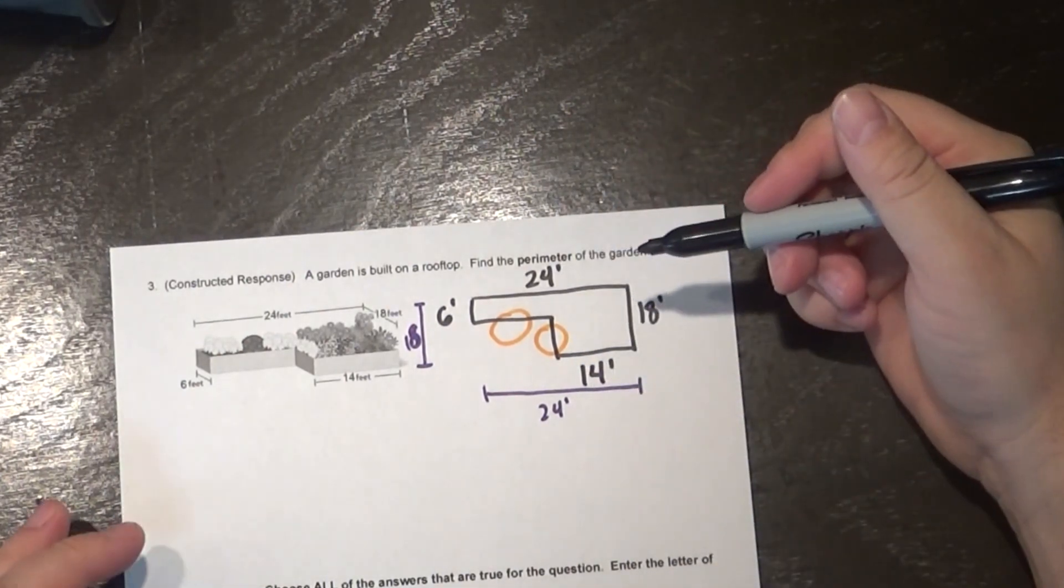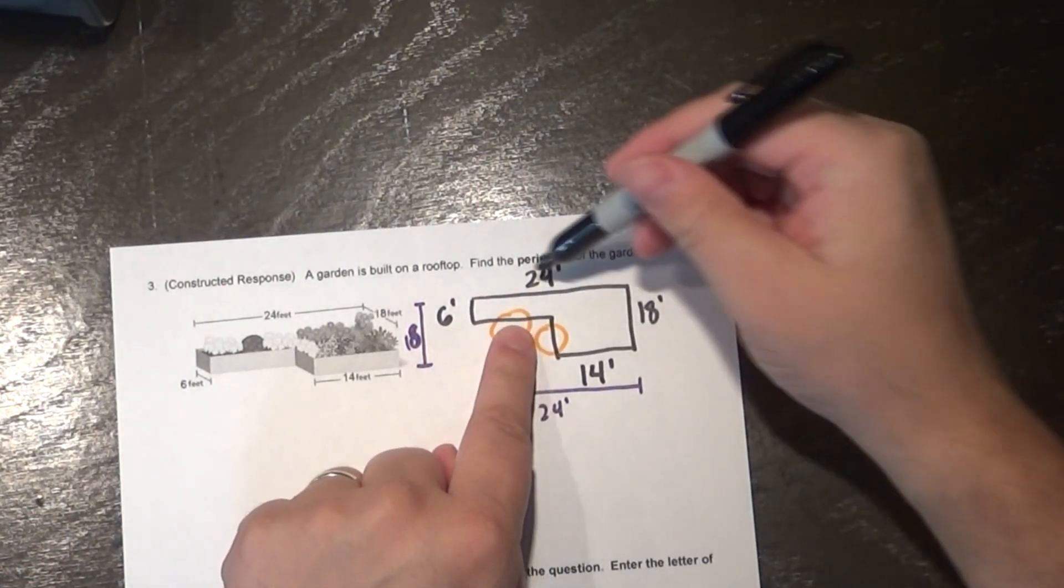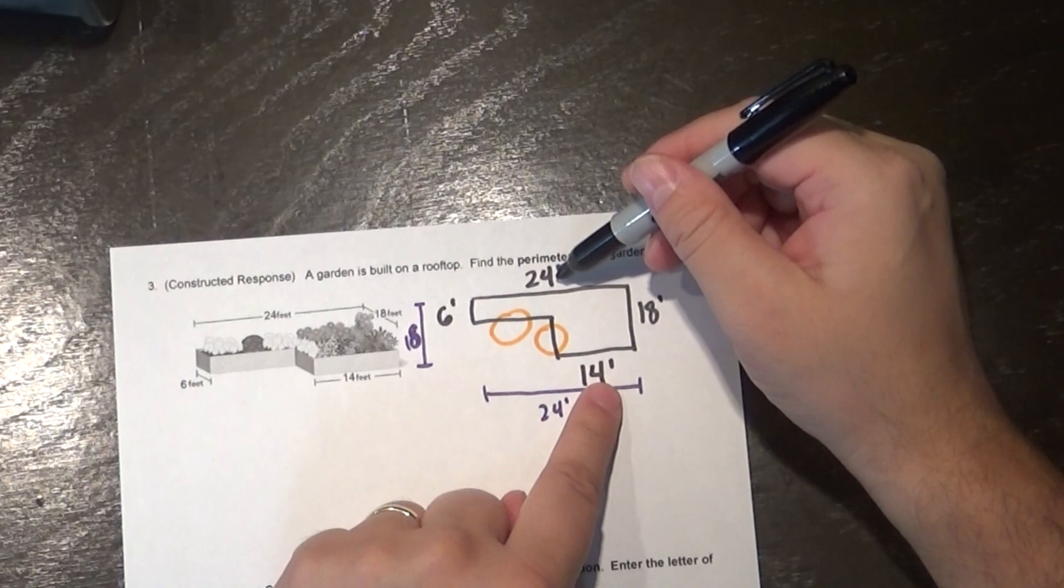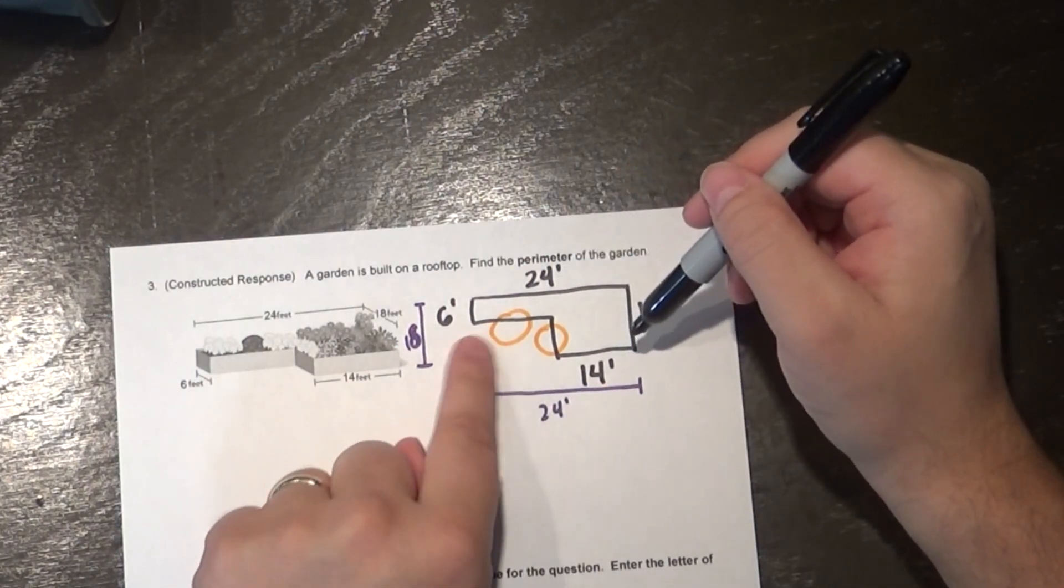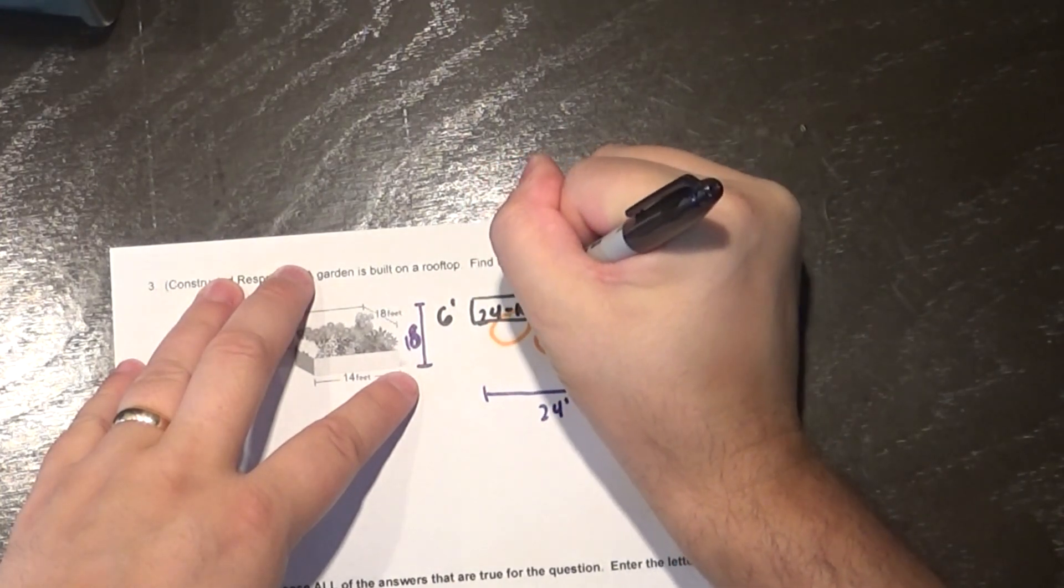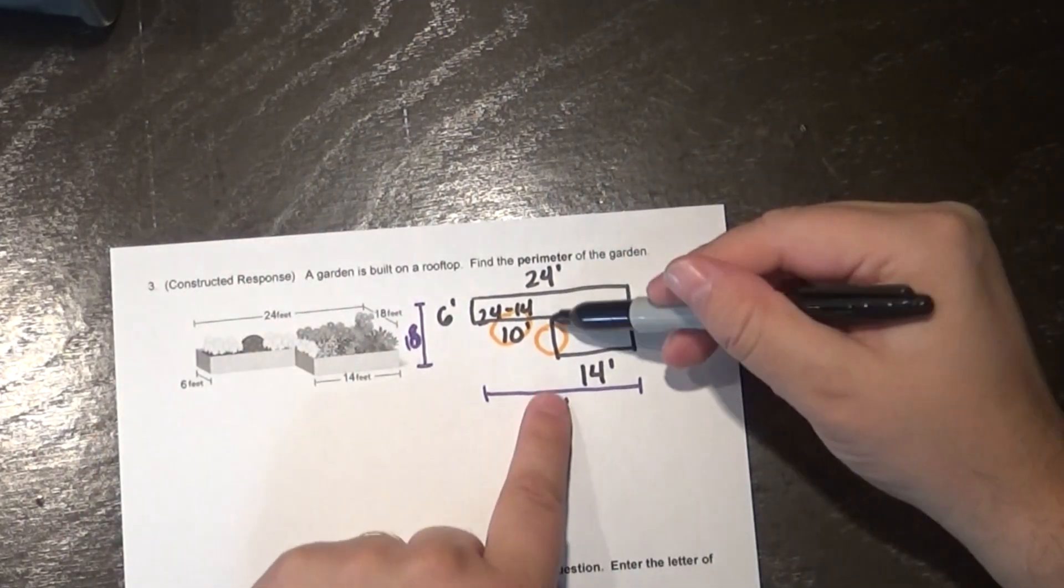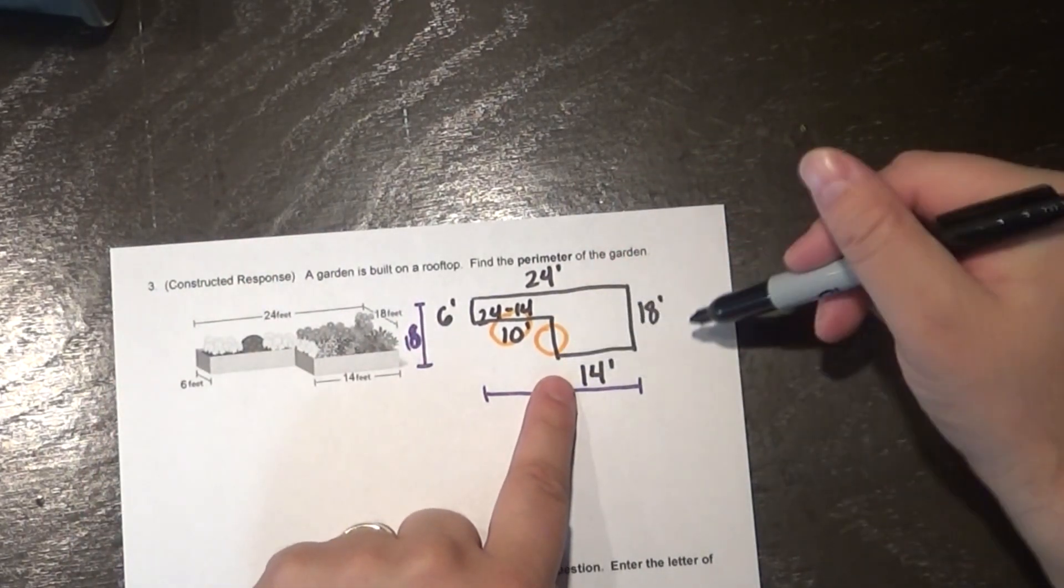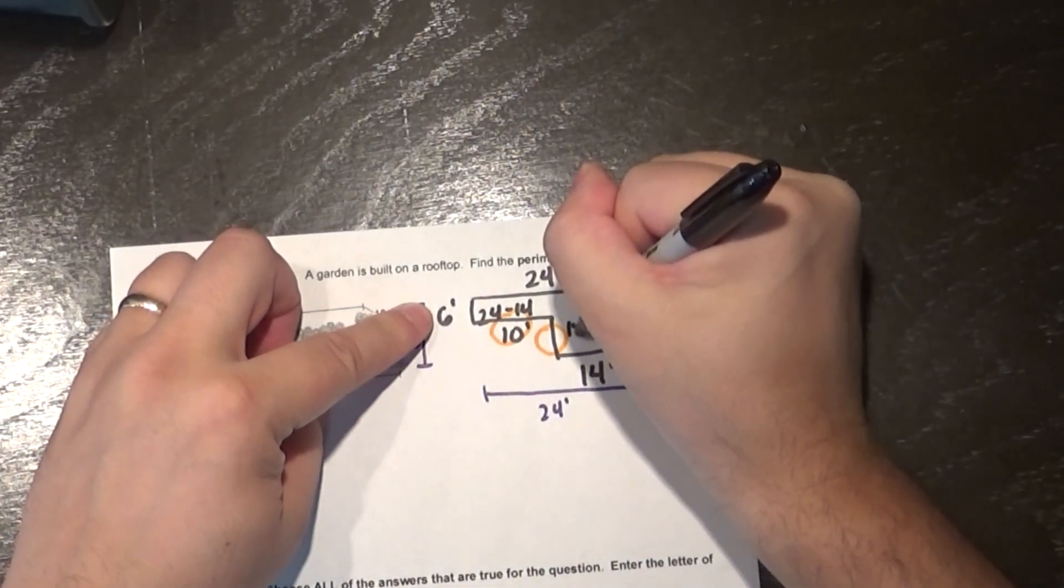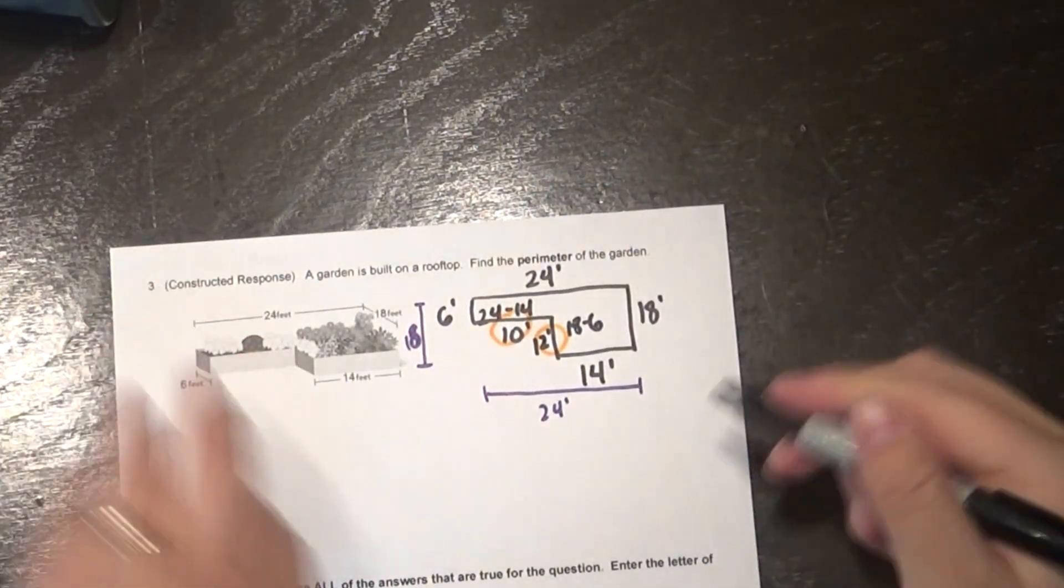So if I wanted to figure out this length right here. Okay I have 24 feet total, 14 of it is consumed by this line right here. So I could take 24 minus 14 and it gives me my missing measurement here. Alright so 24 minus 14, that's going to leave me with 10 feet for this measurement. And then I can do the same concept here. So I have 18 feet total, six of it is taken up right here. So I have 18 minus 6, and 18 minus 6 is going to leave me with 12 feet right there.